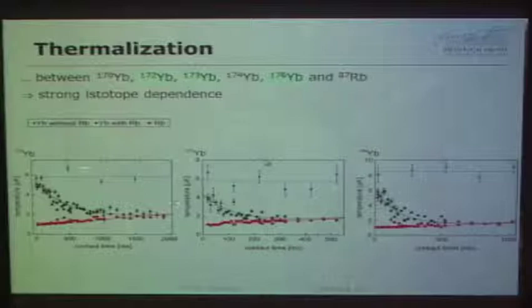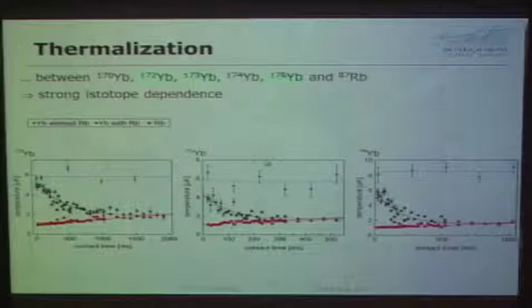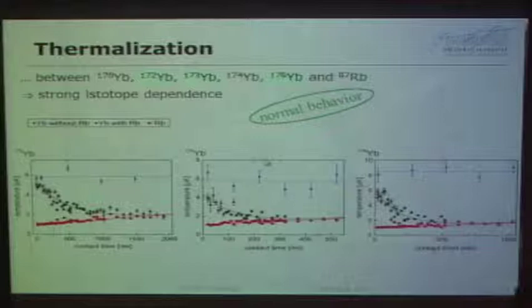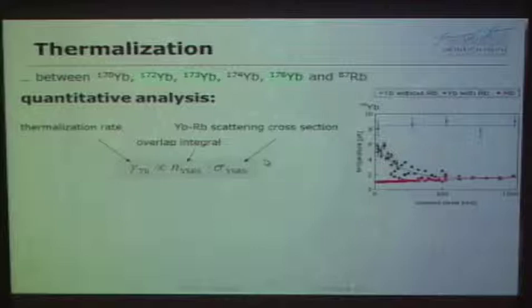Here we have isotopes 170, 172, 173, and 176. There is already a strong isotope dependence, mainly visible on the time axis. The black dots show the temperature of the ytterbium cloud, the red dots the temperature of rubidium, and the blue dots show ytterbium without rubidium present for reference. We see nice thermalization that varies between isotopes, which is what you expect. From the thermalization rate and the overlap integral, we can calculate the ytterbium-rubidium scattering cross section.